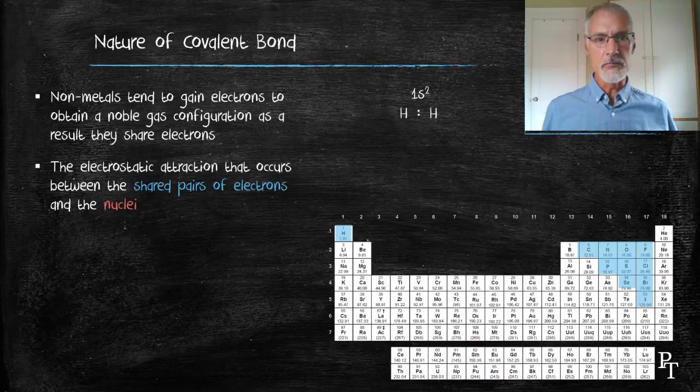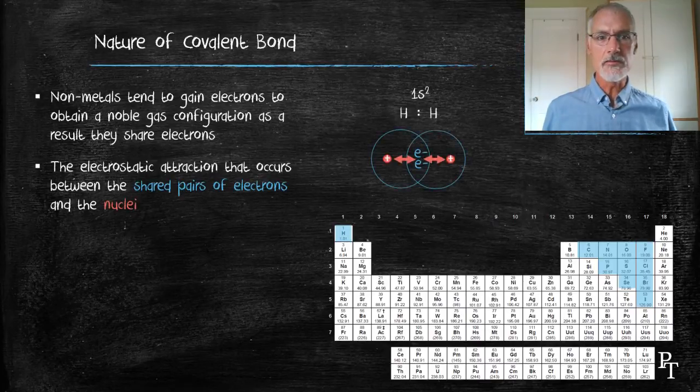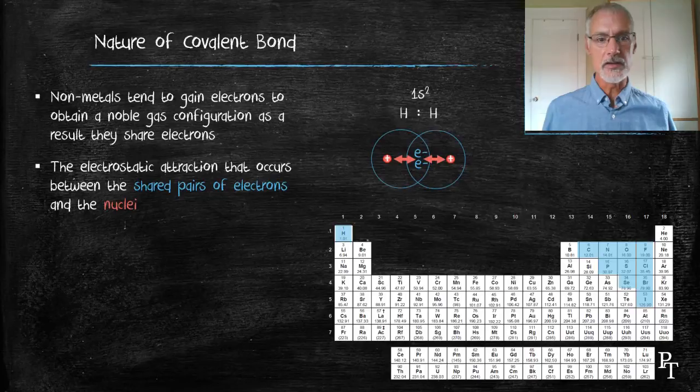What happens in the case of a covalent bond is we have an attraction between the nucleus and those shared pair of electrons. That creates the glue that holds our atoms together.